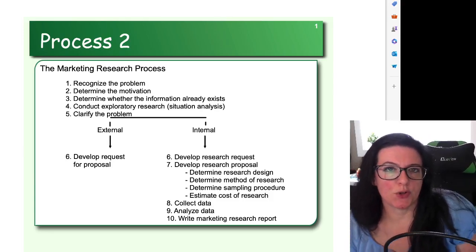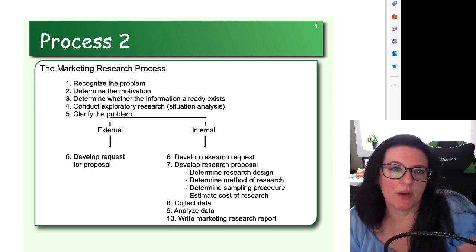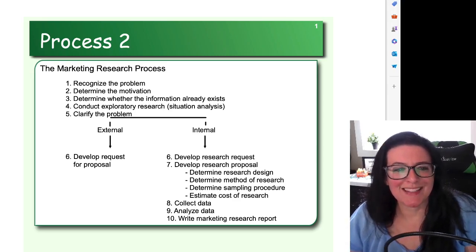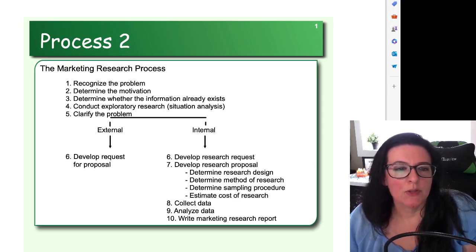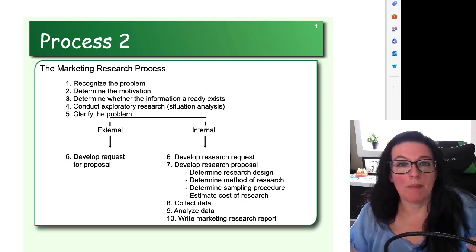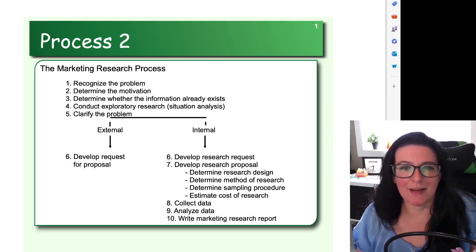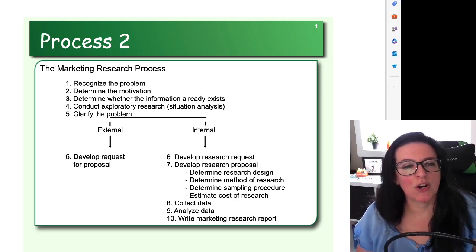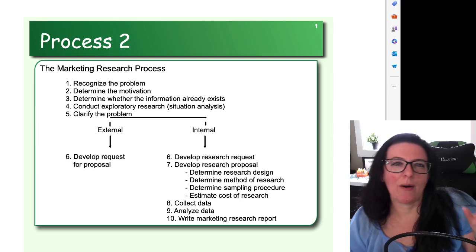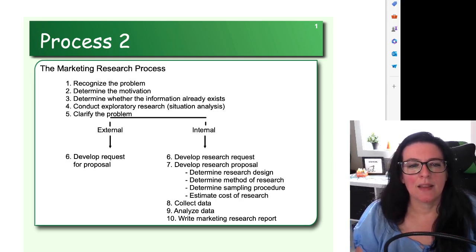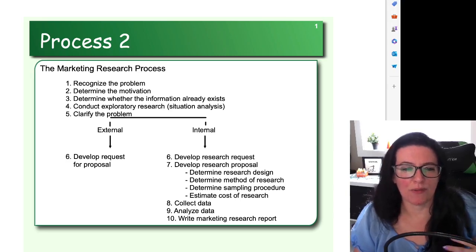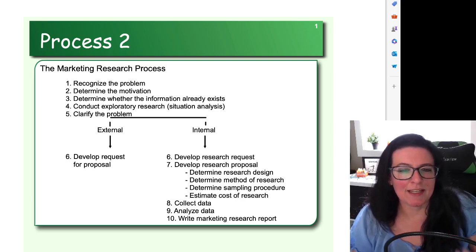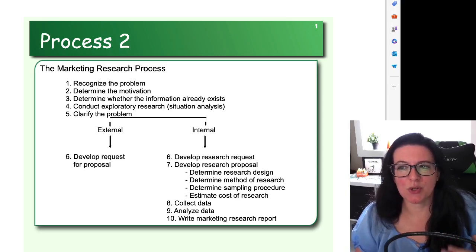We're continuing our discussion of the research process. In previous videos we looked at the problem definition, converting from a management decision problem to a research problem. Management or a company comes to you with an issue and the first thing you have to do is probe and get to the heart of the matter. Management decision problems are statements that specify the type of action required to solve the problem, and we convert that into a research problem which specifies the type of information needed by the decision maker and how that information is going to be obtained.